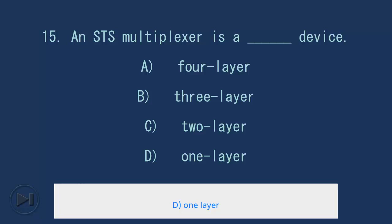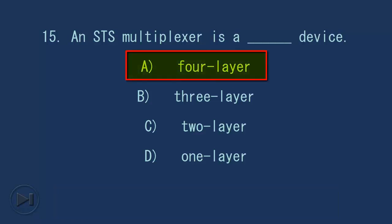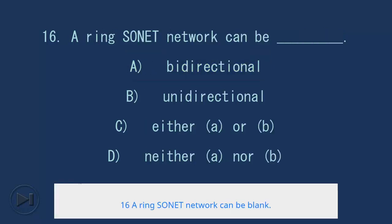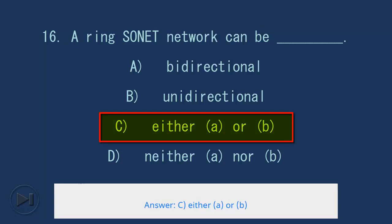16. A ring SONET network can be blank. A. Bidirectional, B. Unidirectional, C. Either A or B, D. Neither A nor B. Answer: C. Either A or B.